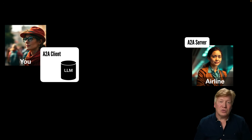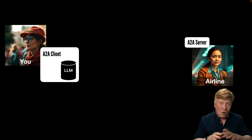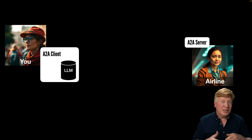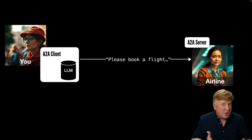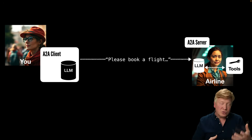The A2A protocol allows either you or an agent to talk to another agent. In the flight booking example, you'd have an A2A client — though there are no consumer A2A clients today. All we have right now is a Google GitHub repo with some sample code; it's not productized yet. Your A2A client has access to an LLM and sends a chat-style message — 'please book a flight, here are the specifics.' The agent within the A2A server uses its own LLM to parse that request and tools to search and book the flight.